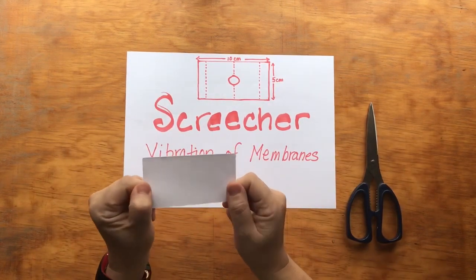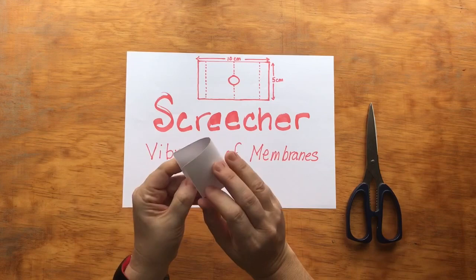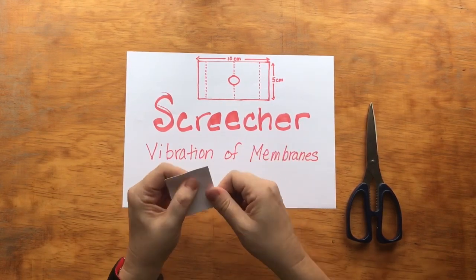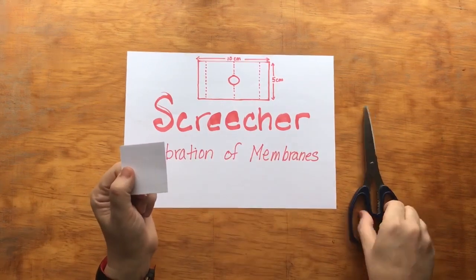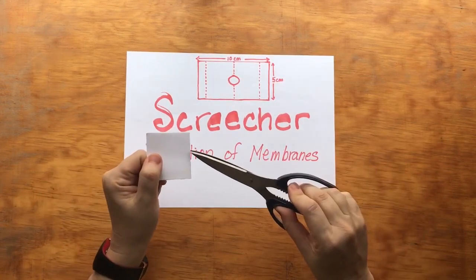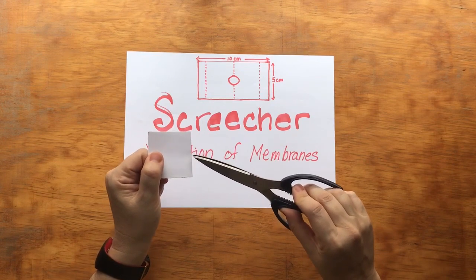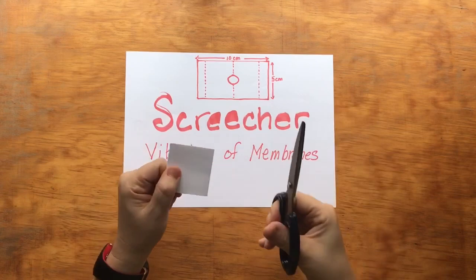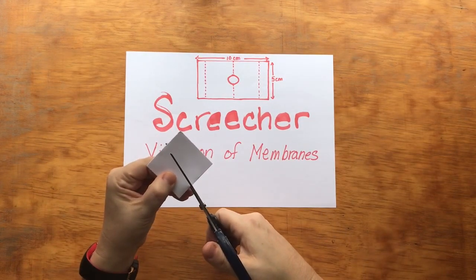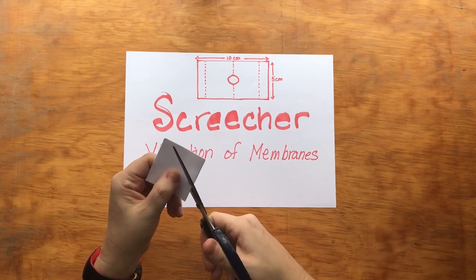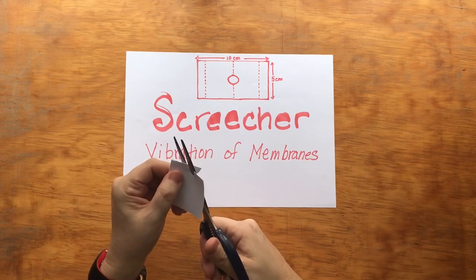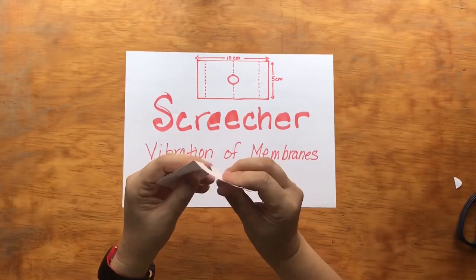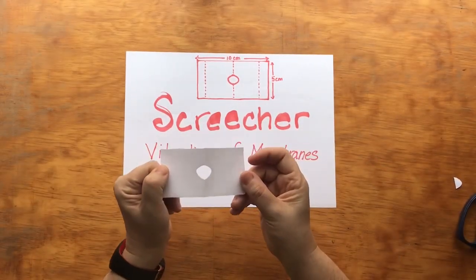Once they have that piece of paper cut out, they then fold it in half like this, and then they take their scissors and cut a half circle on that folded line. The cut can be however they want to do it, but it should be in the middle of the paper. You end up with something like this.